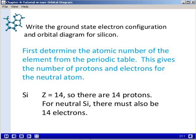So for silicon, the atomic number Z is equal to 14, and that tells us that there are 14 protons. And for a neutral silicon atom, there must also be 14 electrons.